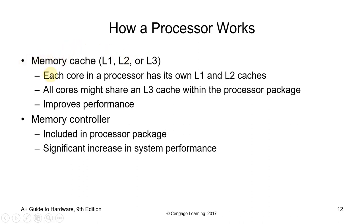Regarding memory cache — L1, L2, and L3: a CPU cache is a hardware cache used by the CPU to reduce the average cost, time, or energy to access data from memory. A cache is smaller, faster memory located closer to the processor core, storing copies of data from frequently used main memory locations. Most CPUs have a hierarchy of multiple cache levels — L1, L2, L3, and rarely L4 — with separate instruction-specific and data-specific caches at level 1.